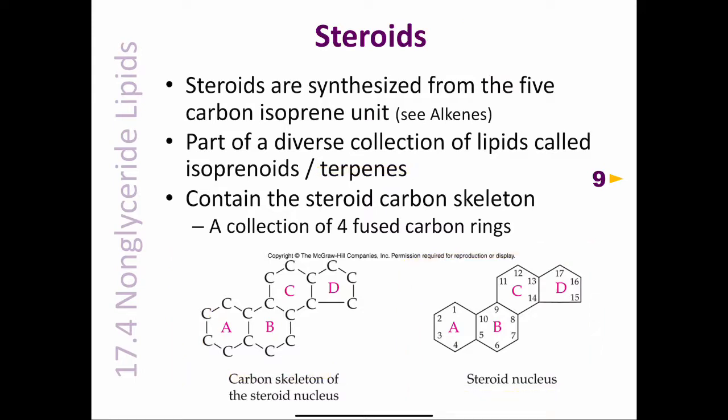The steroid carbon skeleton consists of four fused rings. Each ring pair has two carbons in common — two fused rings share one or more common bonds as part of their ring backbones. Rings A and B, B and C, and C and D are all fused in these structures. Many steroids have methyl groups attached to carbons 10 and 13, as well as an alcohol, alkyl group, or ketone group at carbon 17.